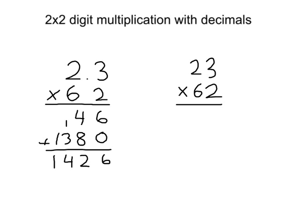Now we can deal with our decimal. Just like in multiplying with tenths and hundredths, we just have to count how many decimal places are in the question. For 2.3 times 62, there is only 1 — the 0.3. So in our answer, we need 1 decimal place. We place our decimal point between the 2 and the 6, and our final answer is 142.6.